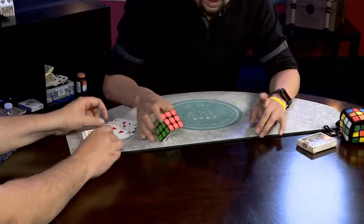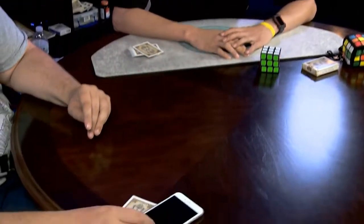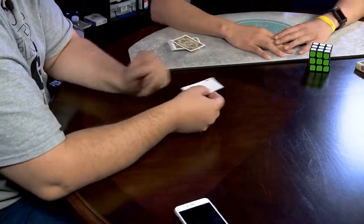And there's a Rubik's Cube solved. So, you have the Ace of Hearts underneath your phone. Boom.